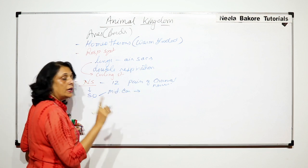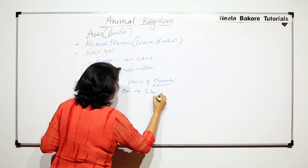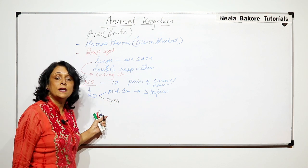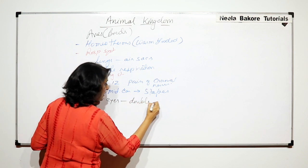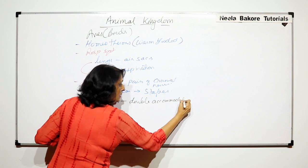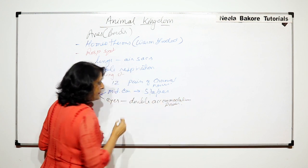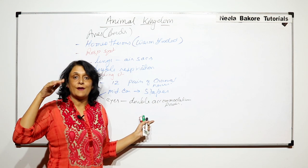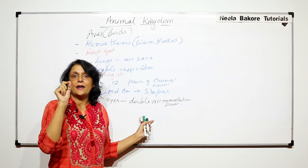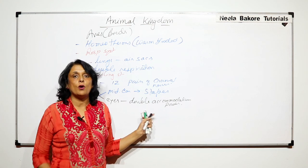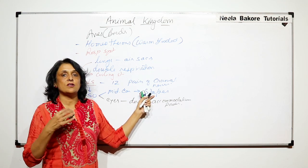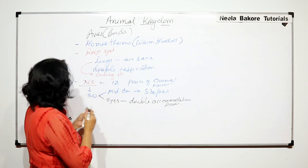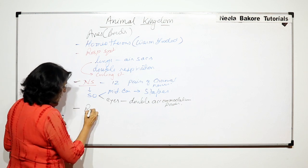When we talk of sense organs, in the middle ear there is only one ear ossicle, that is the stapes. The eyes have double accommodation power. Vision is very important for birds since they are arboreal and need to fly, so they should be able to catch a glimpse of the tiniest possible animal or food. Hearing is not as significant a sense, but vision is very important.